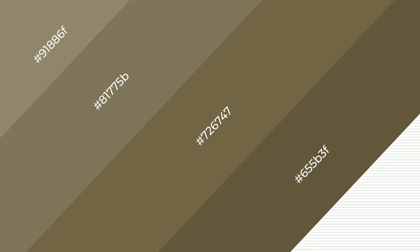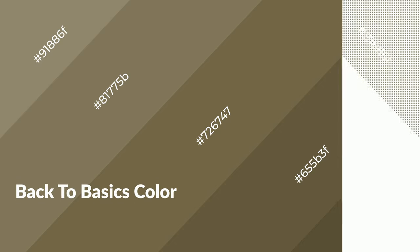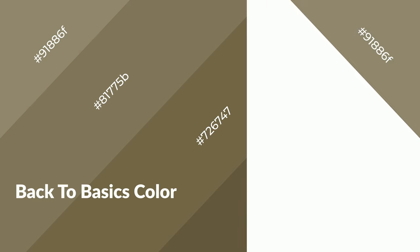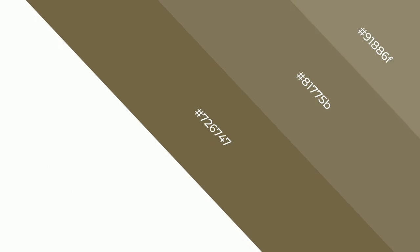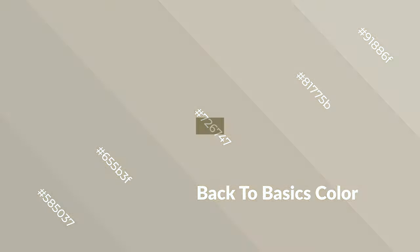Back to basics is a warm color and it emits cozier and active emotions. Warm colors are symbols of warmth, fire, heat, and sunshine. They also evoke joy, passion, love, and even anger. You can see them used in restaurants and gyms.